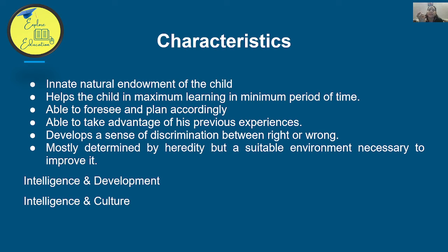We can now draw common points about intelligence: it is a natural endowment of the individual; it helps the child in maximum learning in minimum time — if a child learns more in less time, they are intelligent; it enables one to foresee and plan accordingly; it enables taking advantage of previous experiences and learning from past mistakes; and it develops a sense of discrimination between right and wrong — the ability to distinguish right from wrong is a characteristic of an intelligent person.